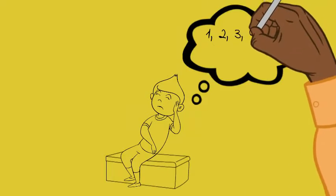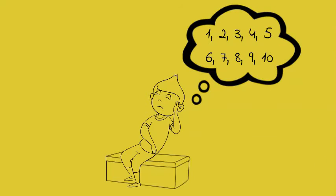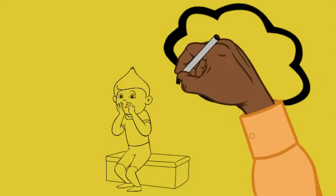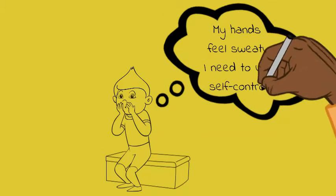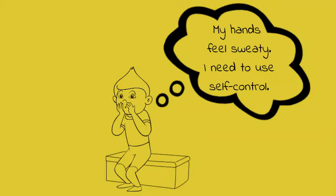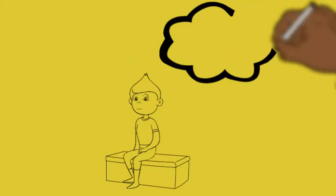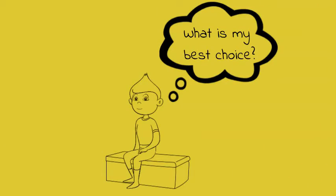He stops and counts to 10, allowing himself to cool off and think. Brad thinks about how his body feels. 'My hands feel sweaty. I need to use self-control.' He thinks to himself, 'What is my best choice?'